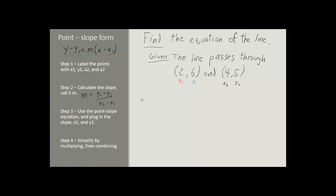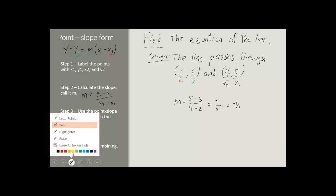Let's plug in our variables into that equation. m is equal to y2 minus y1, that is 5 minus 6, divided by x2 minus x1, that is 4 minus 2. Well, 5 minus 6 is negative 1, and 4 minus 2 is 2. So our slope is negative 1 half, and I will circle that in blue.